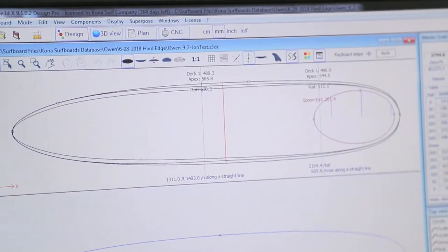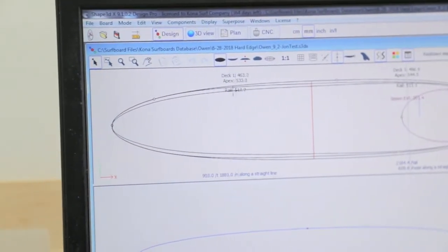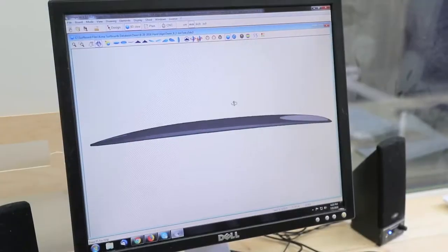Right now we're setting the bottom deck. This is the Owen model, like I said before. Rounded pin. We're going to be cutting the spoon also on this and then we're going to cut the flat bottom.